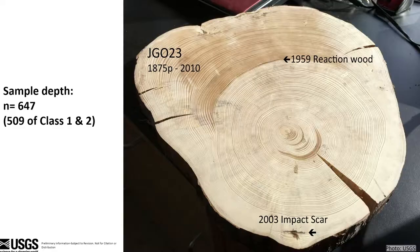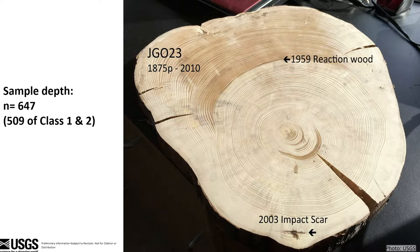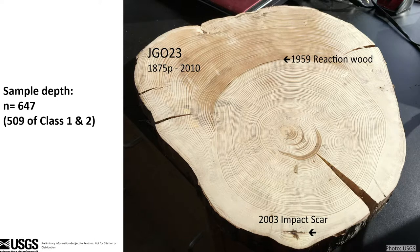We had 647 samples, and 509 of those were class one and two. Here's another example: 1959 reaction wood you can see in the top part of the slide, and from 2003 is a really good impact scar. When the avalanche hit the tree you can see from 2003, but then in 1959 an earlier avalanche had reaction wood being put on the downhill side.